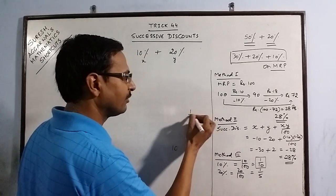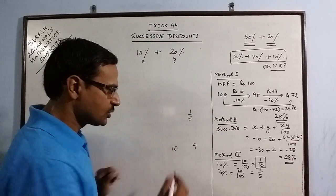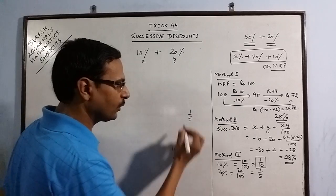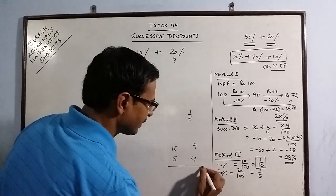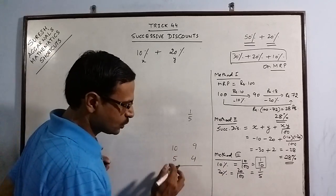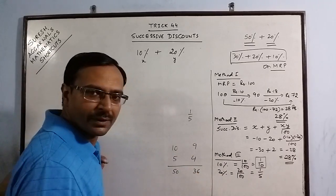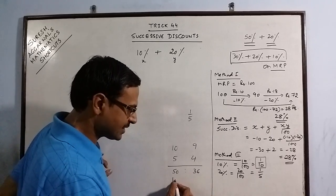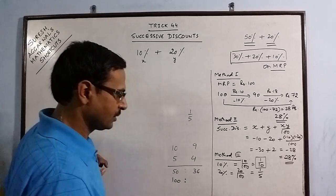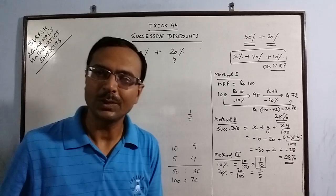Similarly, 1 by 5 means you are getting a discount of 1 on 5. So you were to spend 5 rupees, but now you have to pay only 4 rupees. So just take the product of these 2, 50 and 36, and convert this into 100. 50 ratio 36 means 100 ratio, now you have to multiply by 2, so 72.